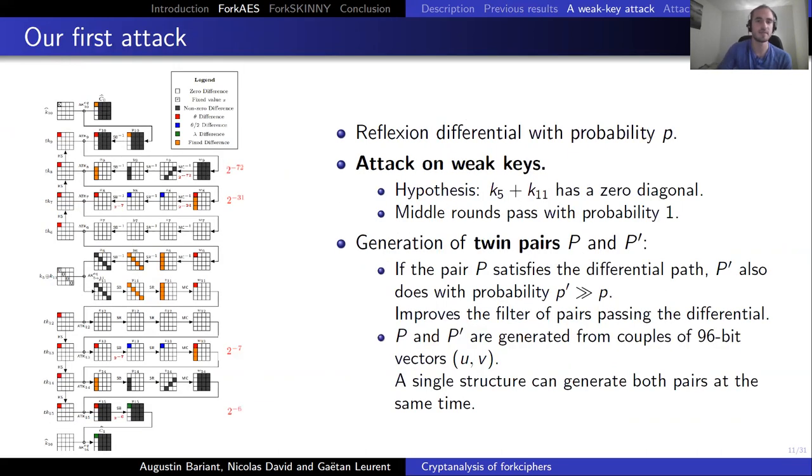So our idea was to do another reflection differential with a lower probability, but to attack only weak keys. We suppose that the key has 0 in diagonal bytes of K5 plus K11. So this corresponds to the key in the middle round, so that middle round passes with probability 1. Also, we generate twin pairs P and P' so that if P passes the differential, then P' also, but with a much higher probability, as P and P' have some common inputs at the beginning. And so if the differences in P collide, then the difference of P' also.